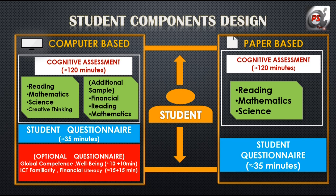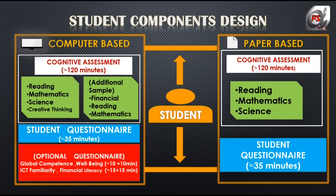The second section is student questionnaire and it will last for 35 minutes. This section will be discussed in detail in our upcoming video of PISA. The third section is an optional one which totally depends upon the student whether to attend or not. It comprises of: global competence, which will judge the knowledge, attitude and skills of a student — how they act on issues of global significance; well-being — their comfort level, psychological, sociological and physiological traits; ICT familiarity — how much a student is familiar with electronic gadgets and their functions; and financial literacy — how a student handles money, whether they know about various types of bank accounts, how to save money, how to use it, etc.